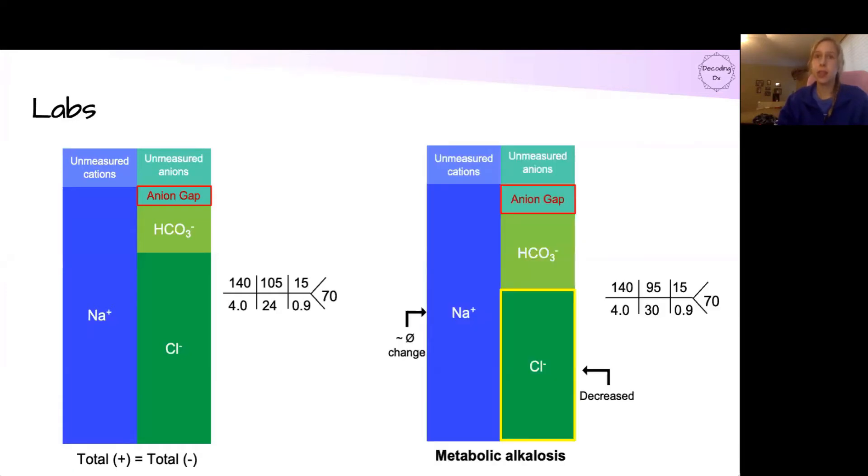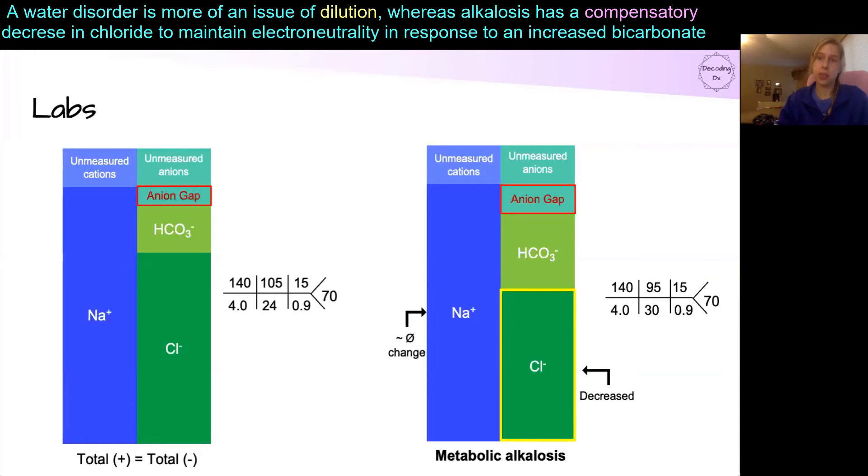In the state of alkalosis, there's an increase in the amount of bicarbonate, and then there's a parallel decrease in the amount of chloride. Now it's important to note that the sodium will not change a whole lot in proportion to the chloride. If the sodium goes down in proportion to the chloride, you're more likely looking at a water disorder like a hyponatremia situation, not an alkalosis. But you can have both of these at the same time.